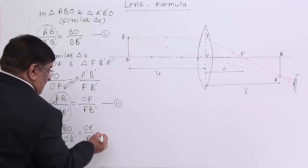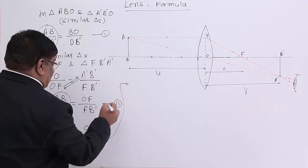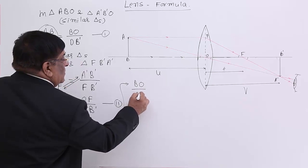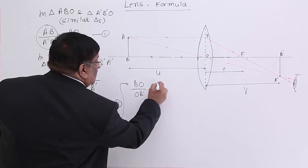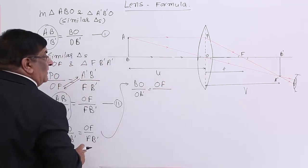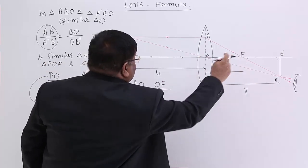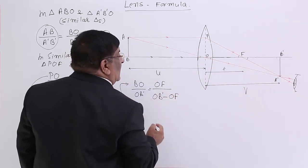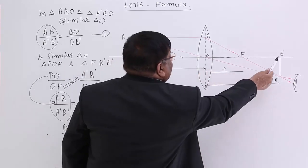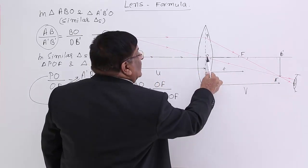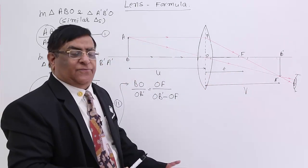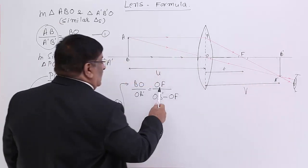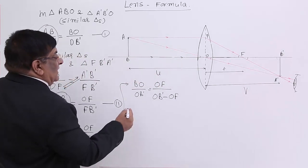We write FB' as OB' − OF, because OB' has the measurement V and OF has the measurement F. So the equation becomes: BO / OB' = OF / (OB' − OF). This converts all terms into measurable quantities U, V, and F.